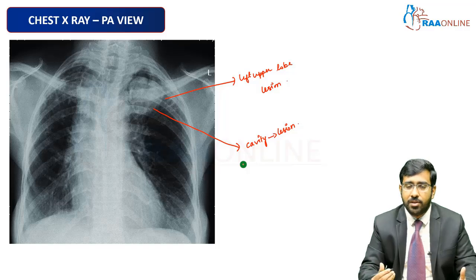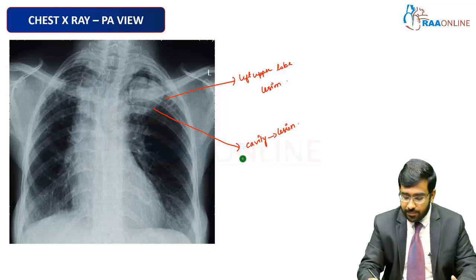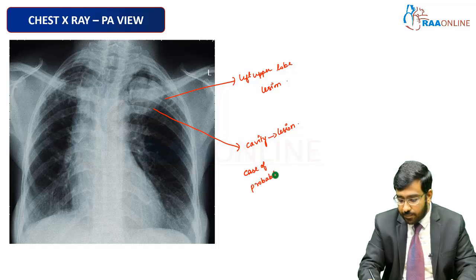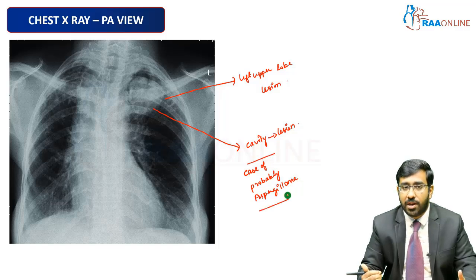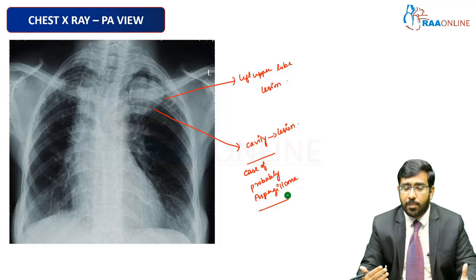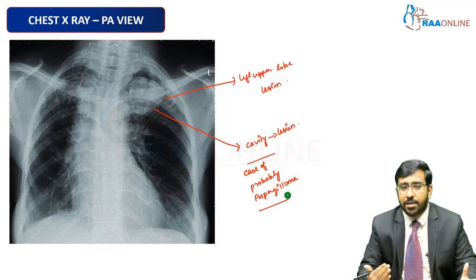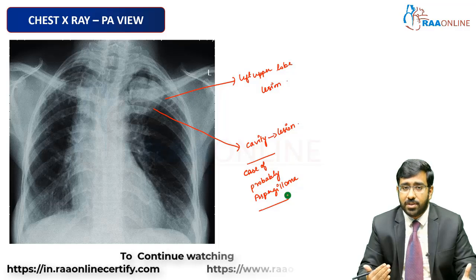The patient has a past history of cavitary tuberculosis, for which treatment was completed one year back. Now an organism has grown within that cavity. This is most likely a case of aspergilloma. The diagnosis is supported by the history of prior TB with cavitary lesion, presenting now with cough and hemoptysis — consistent with aspergilloma on the chest X-ray.